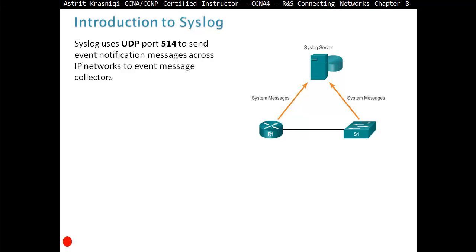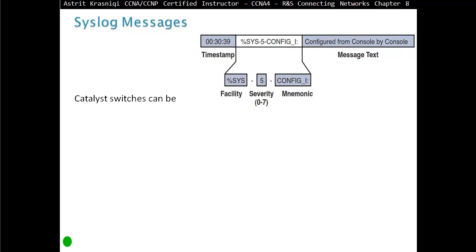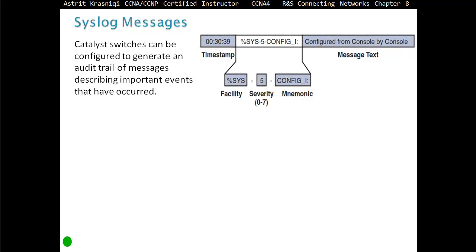Syslog uses an unreliable protocol, UDP, port 514, to send event notification messages across IP networks to event message collectors. Syslog messages on Catalyst switches can be configured to generate an audit trail of messages describing important events that have occurred.